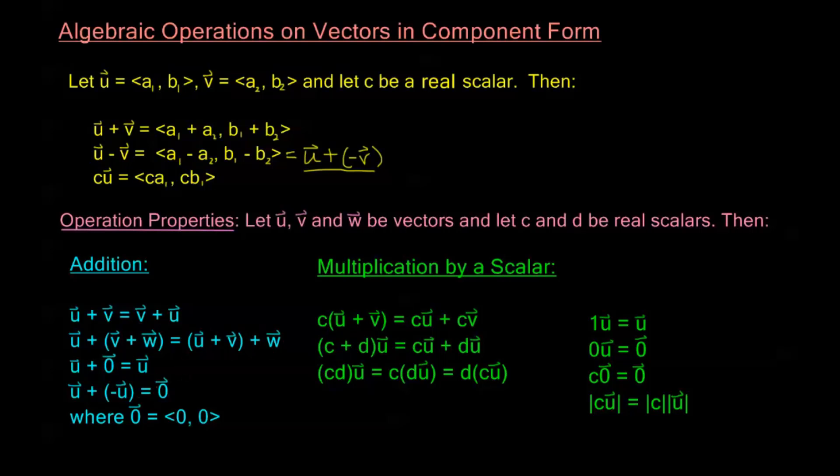Now before I do these last two, take a look at my little note down here. This zero with the arrow on top of it, we call that the zero vector. And that's the vector where all of the entries in the vector are just zero. Now the way that you would draw this vector is it's actually just a dot at the point (0, 0).